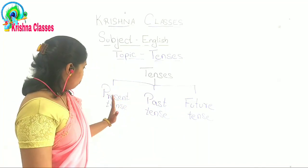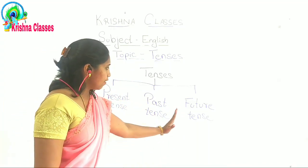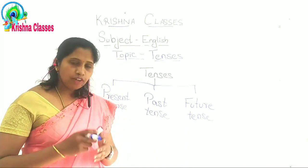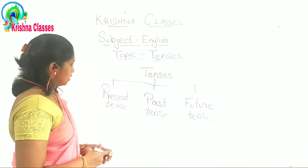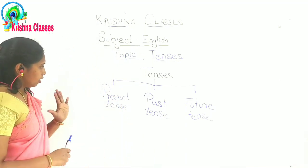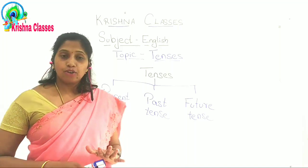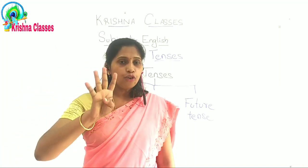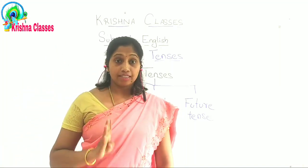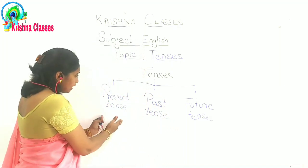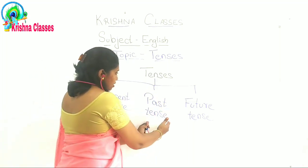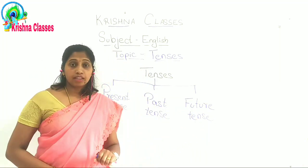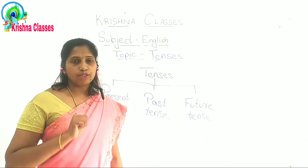So here there are present tense, past tense, and future tense. In each tense, there are four types. In present tense, in past tense, in future tense — there are four types of tense.